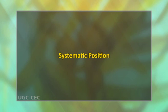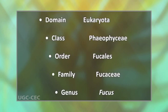Now let us know the systematic position of Fucus. Domain: Eukaryota; Class: Phaeophysi; Order: Fucales; Family: Fucaceae; Genus: Fucus.